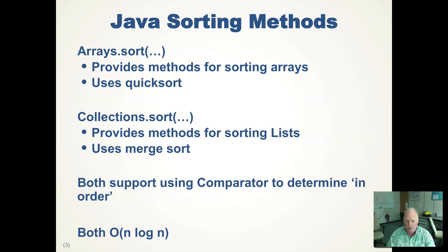So if you had a list of students, you could use a comparator that compares their first name, a comparator that compares their last name, or a comparator that compares their GPA, and use the collection sort to have the list sorted differently depending on the comparator you use. Both quicksort and merge sort have a big O of n log n, which is reasonably efficient, and that's why Java chose these sorting algorithms.